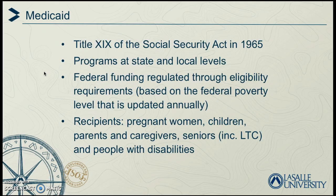Medicaid was authorized in 1965 under the Social Security Act, with funding and programs provided at the state and local levels with some federal funding, regulated through eligibility requirements. Recipients include pregnant women, children, patients and caregivers, seniors such as those in long-term care, and those with disabilities.